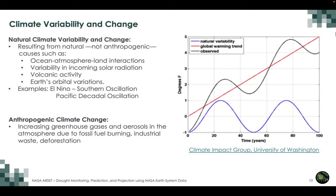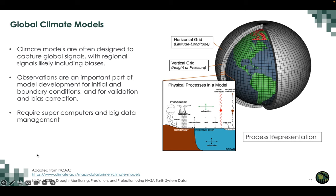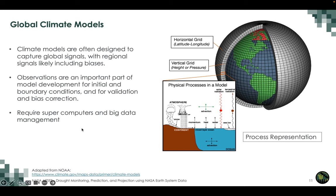Climate change is where there is a trend and the climate mean is also changing. Global climate models are designed to capture both natural and anthropogenic climate variability and change. Most global models are grid models with horizontal grids in latitude and longitude, and vertical stratification in heights or pressure. At each grid point, detailed physical processes are modeled, representing interactions among different components. These are complex models requiring supercomputers and big data management. It is important to keep in mind that climate models are often designed to capture global signals, so at the regional scale there may be biases that need to be examined.